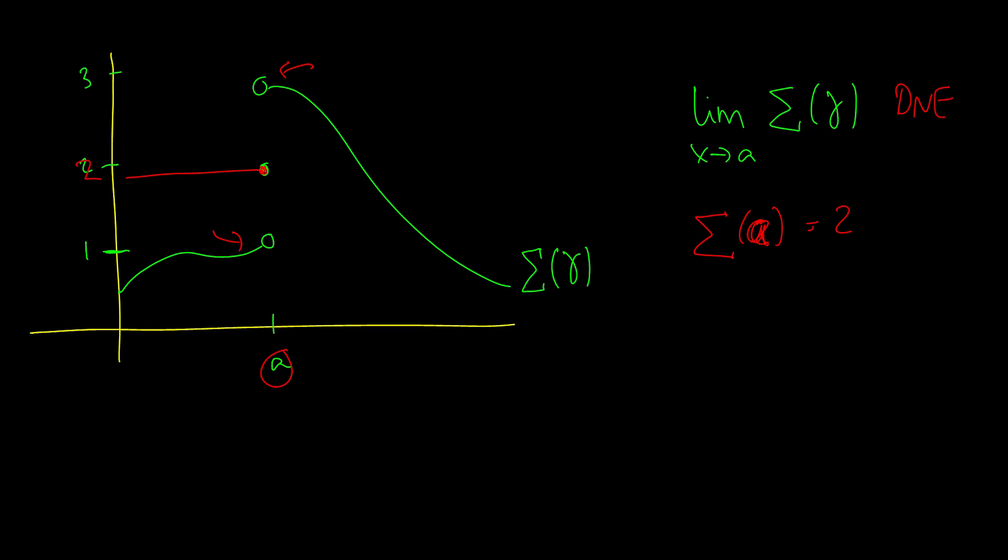But let's take a look from the left. When we approach a from the left of this awesome function, then we get one. And when we approach it from the right, notice I write this out every single time, then we get three. And we know that these two numbers are not the same, so they can't have a limit. And that's the answer to that question.